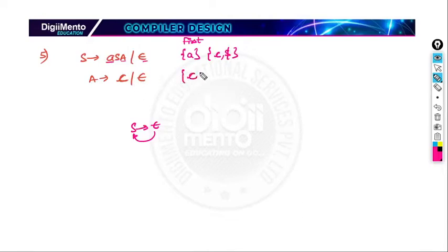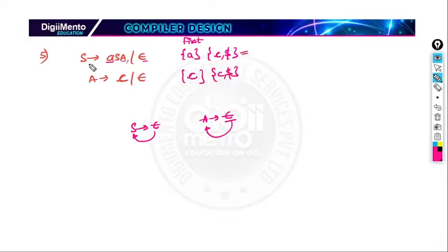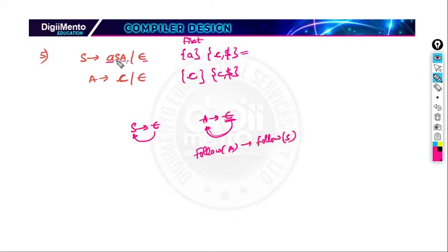FIRST of A is small c, and since A generates epsilon, we have to calculate FOLLOW of A. After A there is nothing, so FOLLOW of A is FOLLOW of S. For FOLLOW of S, we have A in the production, so FIRST of A is c, giving us c. And since A generates epsilon, FOLLOW of S also includes dollar. So FOLLOW of S is {c, dollar}.